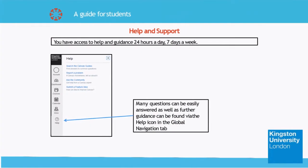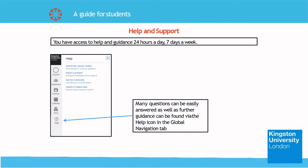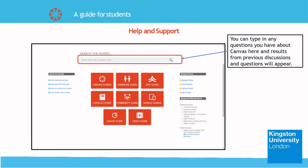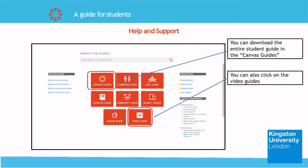You have access to help and guidance 24 hours a day and 7 days a week. Many questions can easily be answered and further guidance can be found via the help icon in the global navigation tab. You can type any questions you have about Canvas in the search bar and results from previous discussions and questions will appear. Additionally, if you want more specific information and how-to's in Canvas, you can download the entire student guide and Canvas guides, or click on the video guides which contain many videos made to answer frequently asked questions.